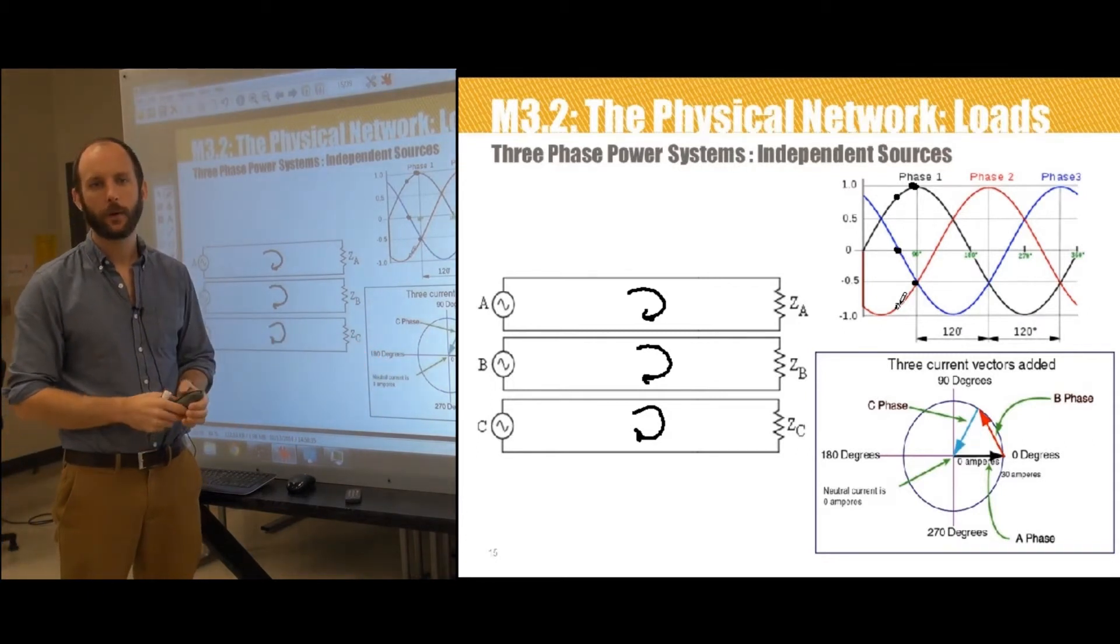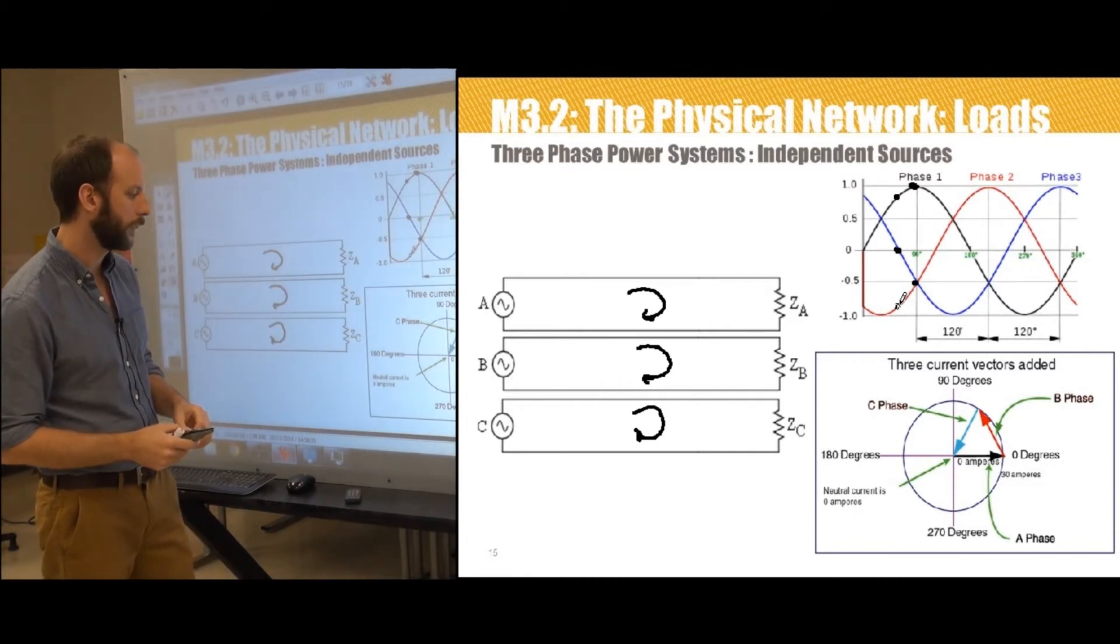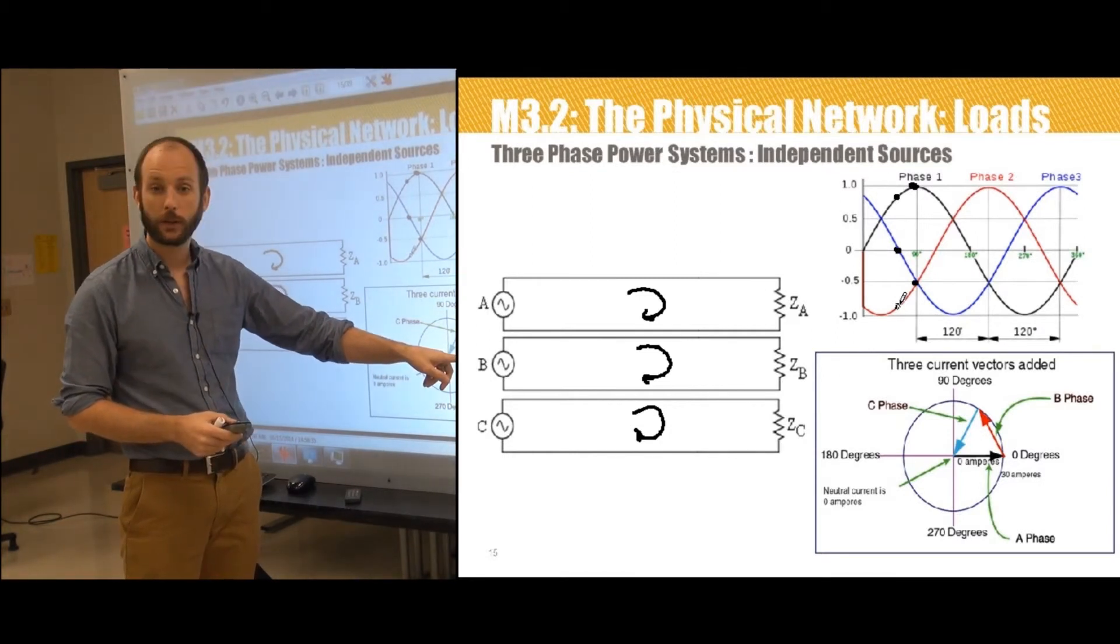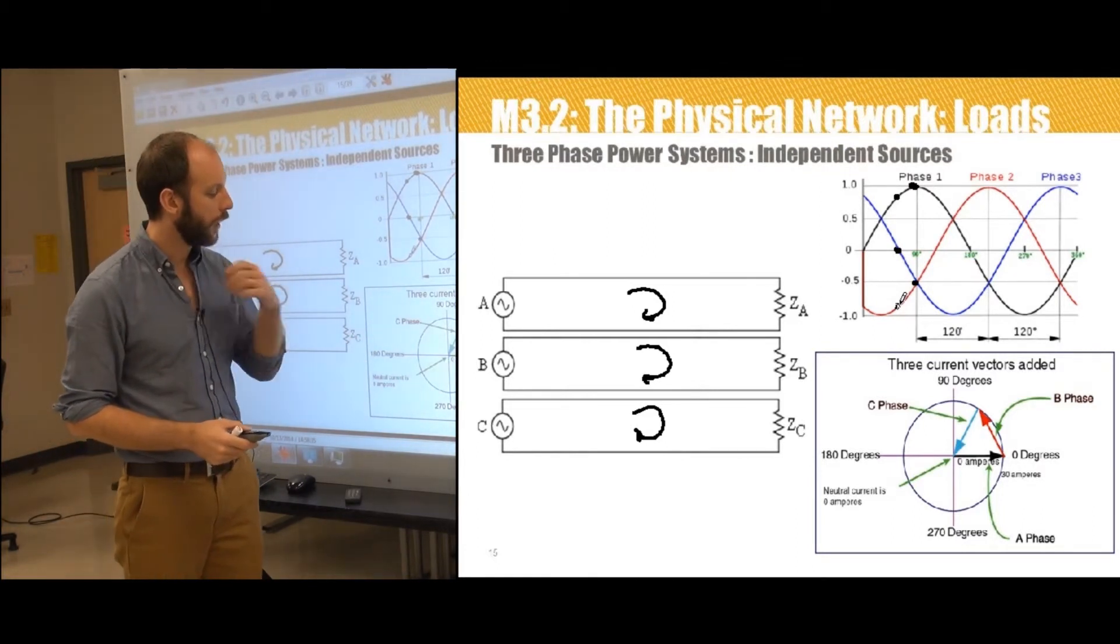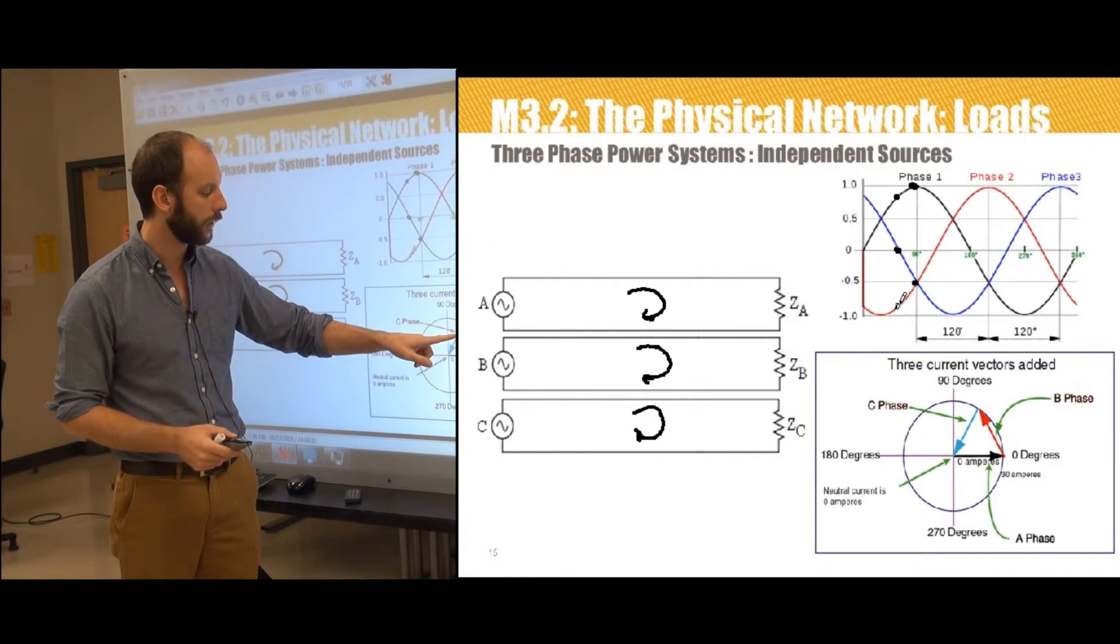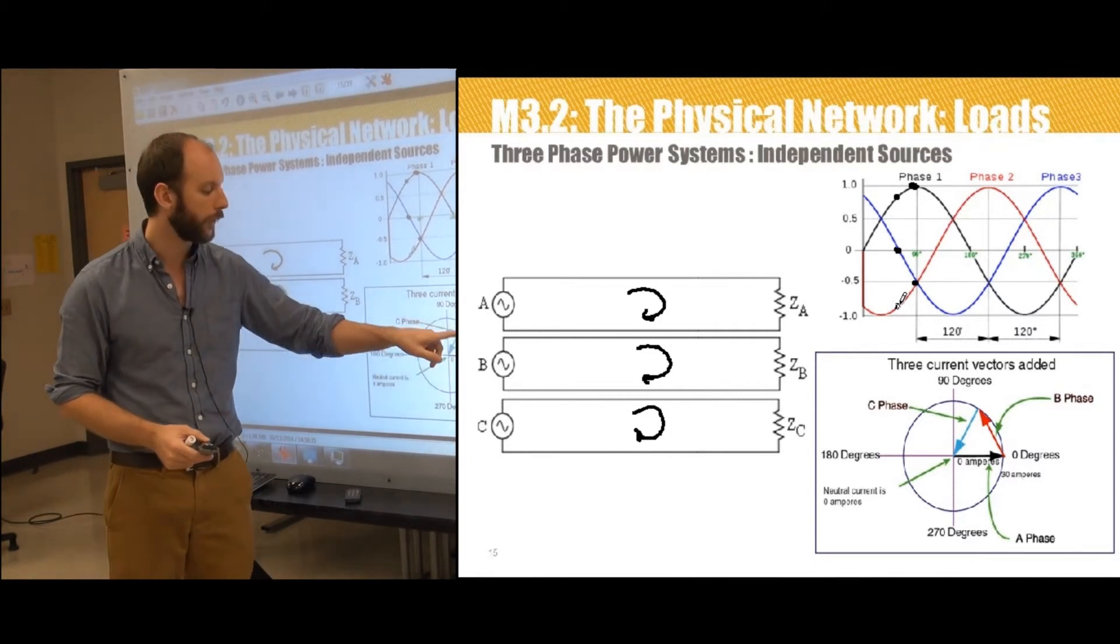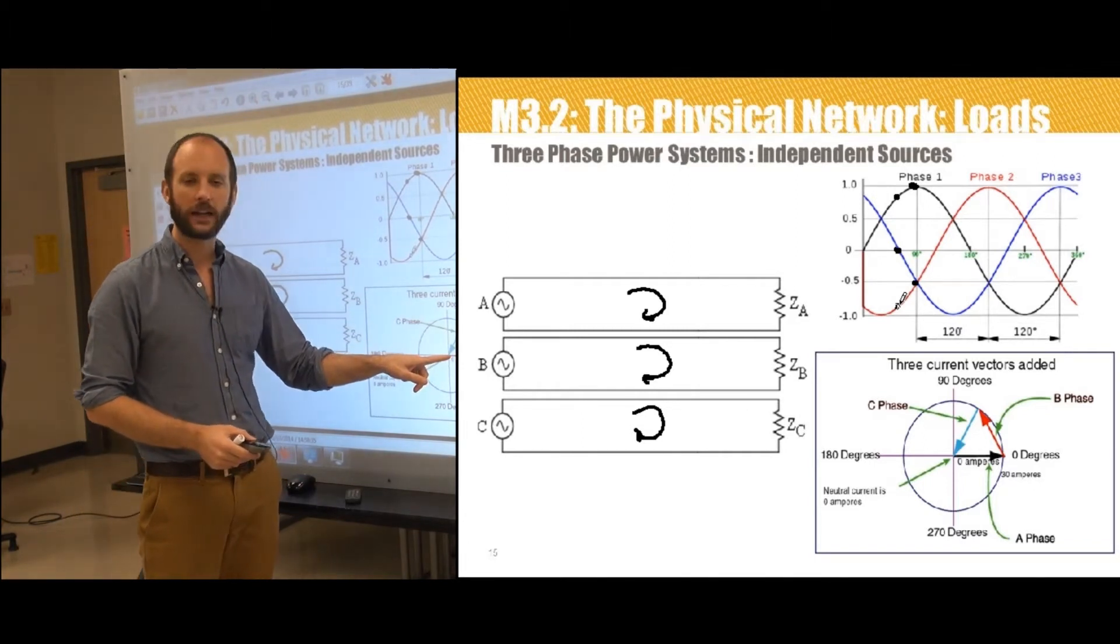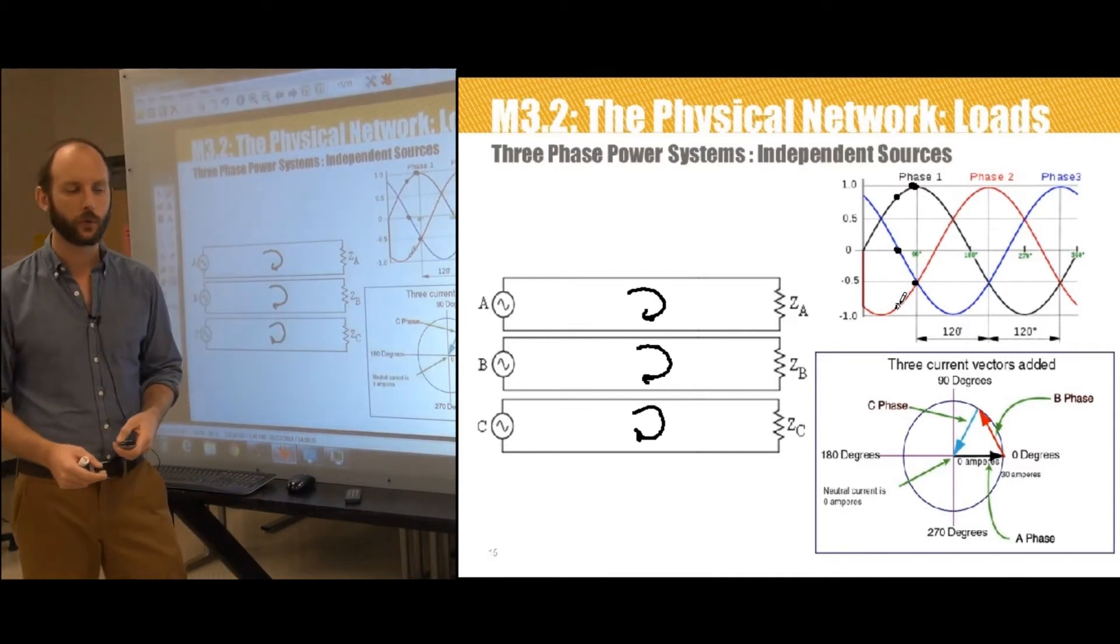This could also be seen by representing the currents as phasors, as in the diagram here. So I've got three current vectors that I'm adding together. I've got the first current, and assuming that they're of equal amplitude, the first current is the reference, so it's got zero degrees of phase shift. The second current is 120 degrees with respect to the first current. And if I add all of those together, assuming that they have the same magnitude, which will be the case if ZA, ZB, and ZC are the same. If I add those three vectors together, I get back to the origin, showing that because of the direction of the vectors, those are going to cancel.